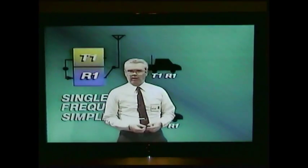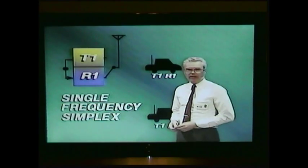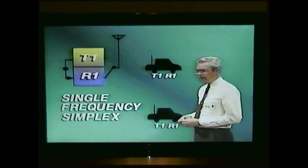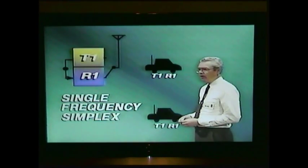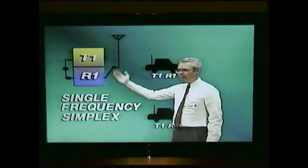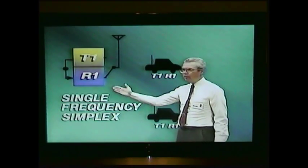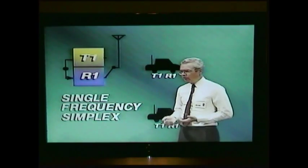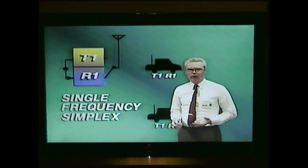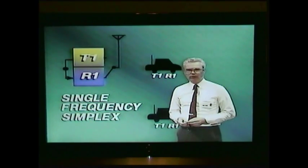Probably the most commonly used radio system is a single frequency simplex, and the diagram that you see here looks like this. The base station has a transmitter, let's say it's on frequency T1, and the receiver also has the frequency T1 as well. In the simplex station, the receiver is normally disabled or muted when the transmitter is operated. Otherwise, you'd hear your own transmitter and your voice would come booming out of the receiver loudspeaker.